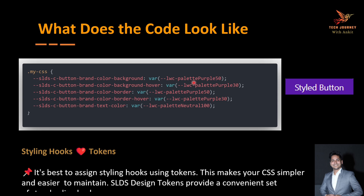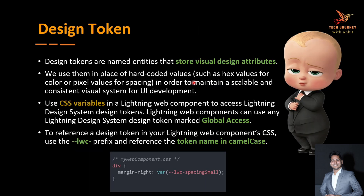The best way to override the CSS classes is by using the design token. Salesforce recommends that we use the design token whenever we apply any CSS, to make our CSS simpler and easier to maintain. Design tokens are nothing but named entities that basically store the visual design attribute. Rather than specifying a hexadecimal value or a pixel value to any attribute, we can pass a design token.